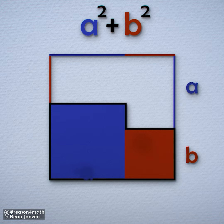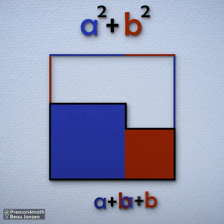The area of this extended square is A plus B times A plus B, or A plus B squared.